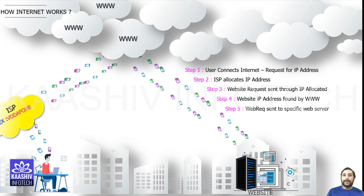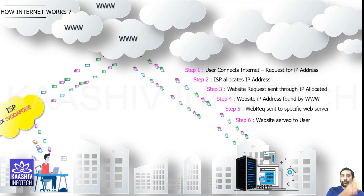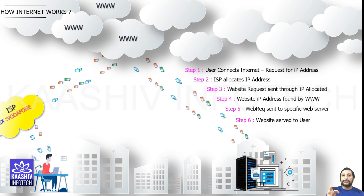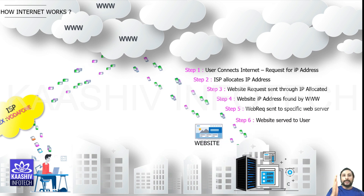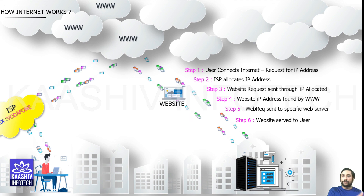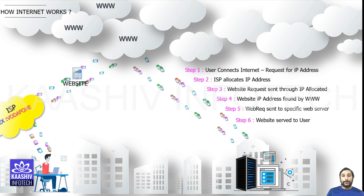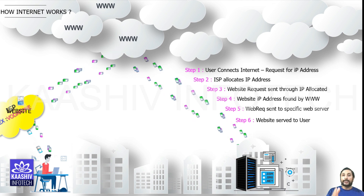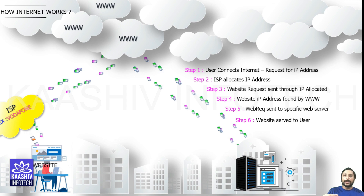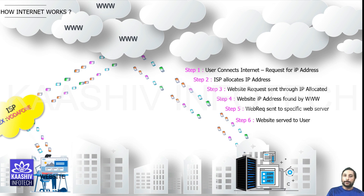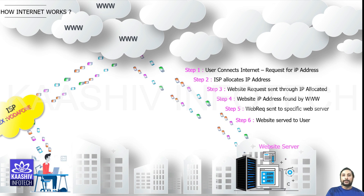And over here, the IP address — which is a unique numerical identifier, like a phone number — is used to identify the server and it is used to identify the user. This IP address is unique and it is given dedicatedly to that particular person in the internet world.